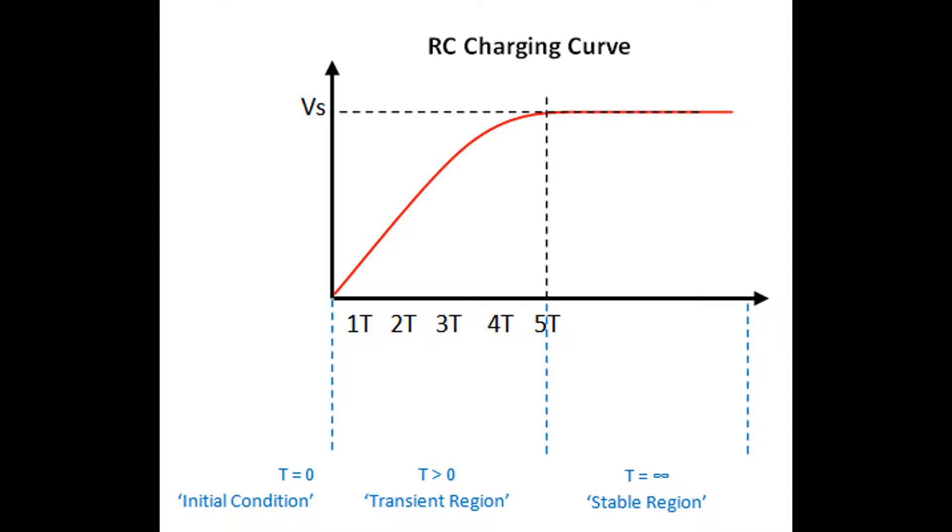So to recap, because the percentage change is so small beyond 5T it is ignored and the transient is said to be complete. In this case VC equals VS. Mathematically it's great but practically it can cause confusion.